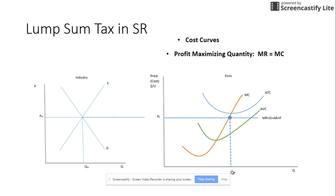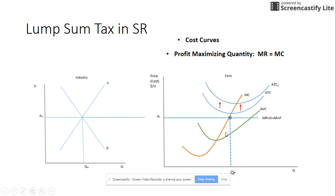Let's look at the hundred dollar lump sum tax in the short run. A lump sum is a fixed cost, so the AFC would shift up because this is an extra fixed cost the company now has to pay. The AVC is not affected because it's a fixed cost. The ATC — which is AVC plus AFC — will also shift up since AFC is shifting up. Remember that marginal cost is derived from the change in variable cost, so the marginal cost is not affected. This is really about the ATC shifting when we're talking about the lump sum tax.